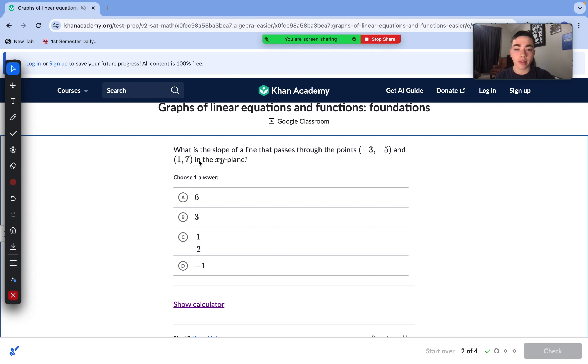On to our next question. What is the slope of the line that passes through the points negative 3 comma negative 5 and 1 comma 7 on the xy plane? They're looking for slope of a line from two coordinate pairs. So, there is an equation that you guys are expected to know for this. It is our slope formula. m equals y2 minus y1 over x2 minus x1.